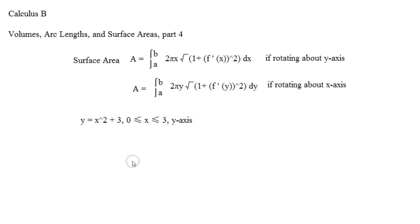All right, hi. Today we'll be talking about surface area in part four of our series on volume, arc lengths, and surface areas in calculus. And surface area formulas are pretty darn easy. It's just 2π times x times the square root of 1 plus our function derivative squared dx if we're rotating about the y-axis. And then all you do is change out the x values with y's if you're rotating about the x-axis. We're going to rotate about the y-axis.